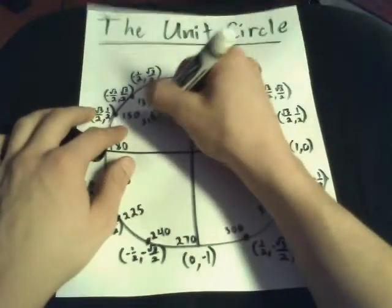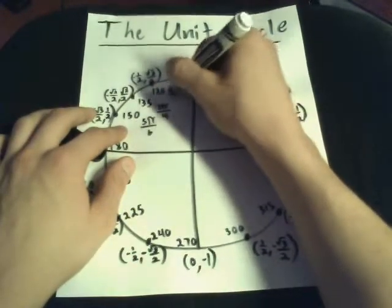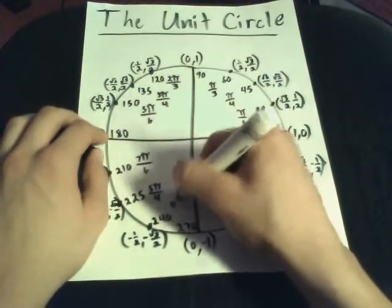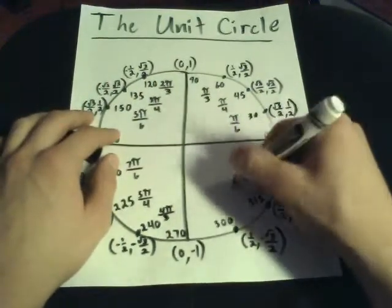Next are some radians. They go in a common pattern from the axis, the x-axis, going up the y-axis of 6, 4, 3. It starts off with just pi's in the first quadrant.